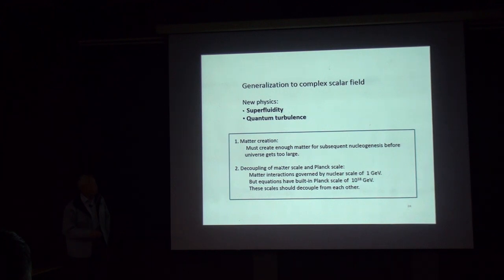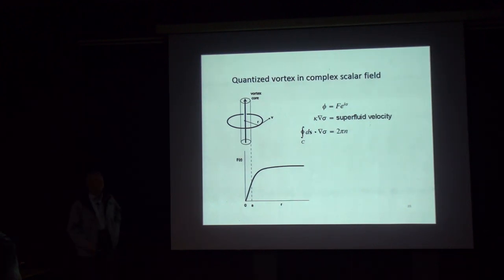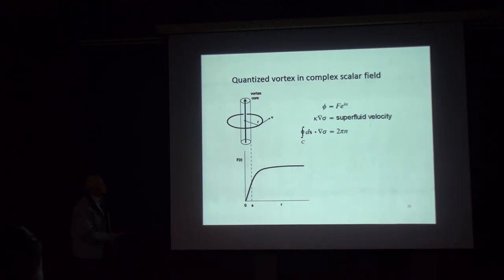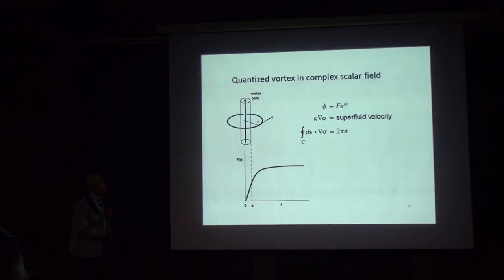We can solve both problems by introducing this new physics. In a superfluid scalar field, one of the most remarkable features is quantized vorticity. A vortex involves a vortex line — a core containing the line — and around that line the integral of the superfluid velocity must equal 2 pi times an integer, because it comes from a wave function. This is a quantum vortex.